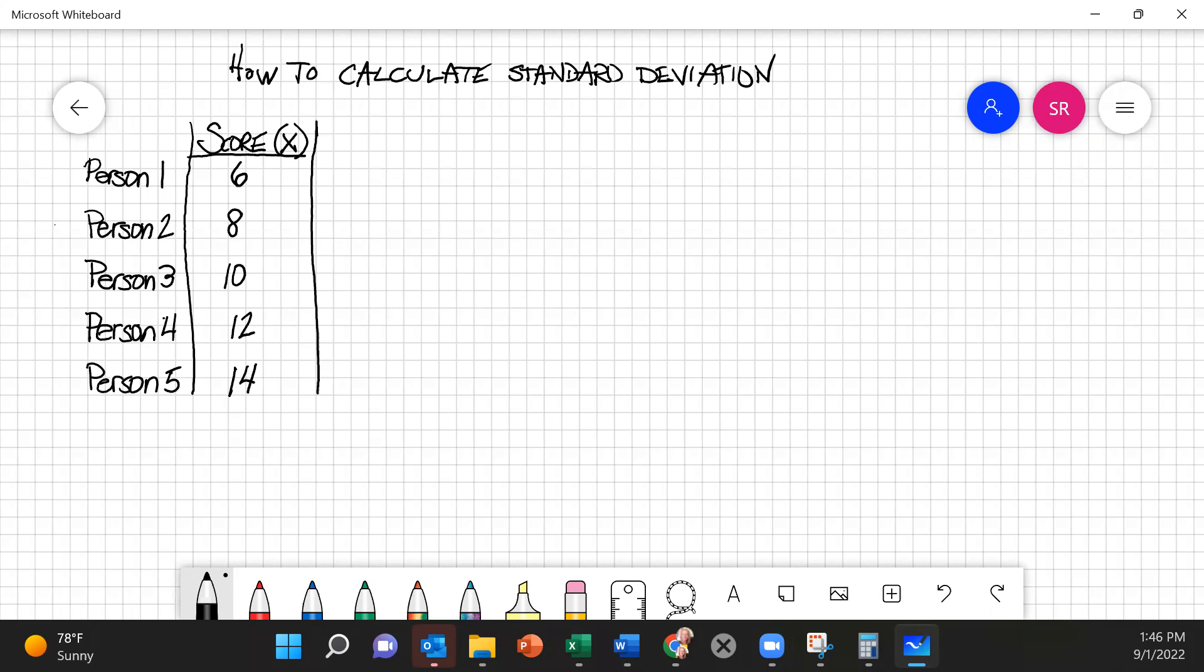In order to calculate standard deviation, there are a number of pieces of information that we need. First of all, we're going to need the mean of the data set, which we abbreviate as M. Next, we're going to need to calculate each deviation and square it. Next, we're going to have to calculate the sum of squares and the variance and the standard deviation.